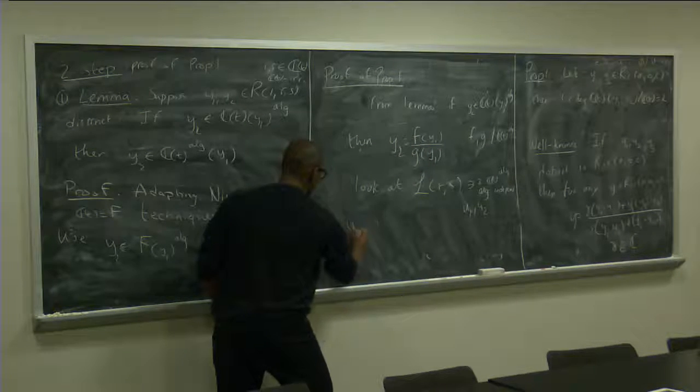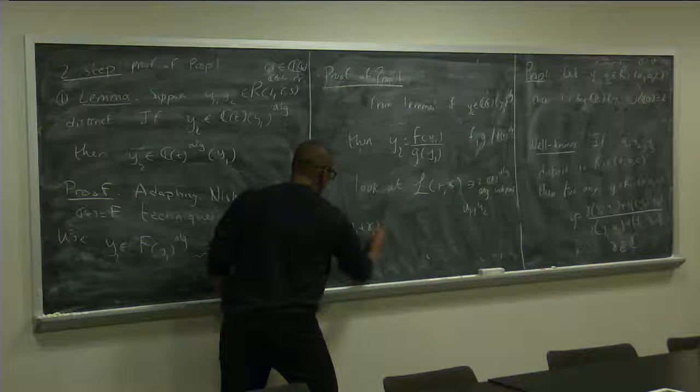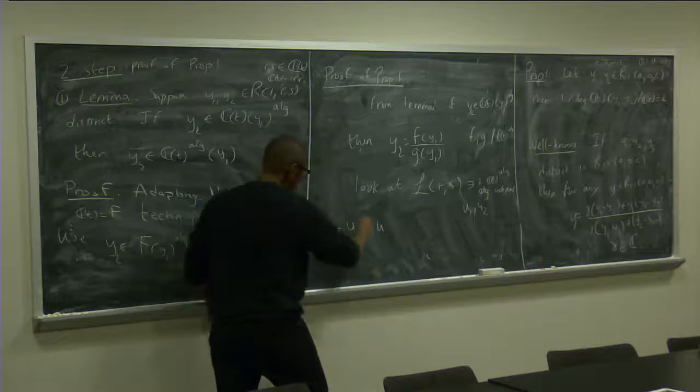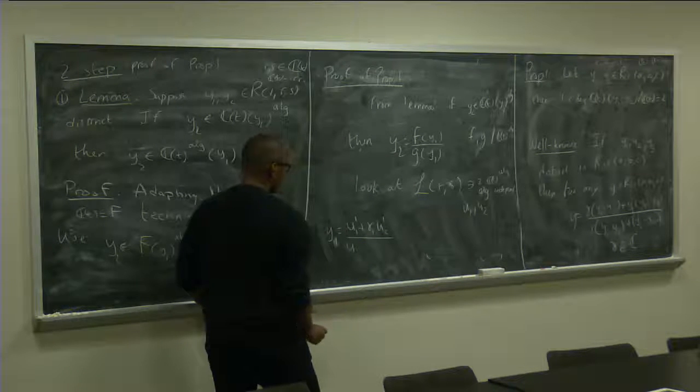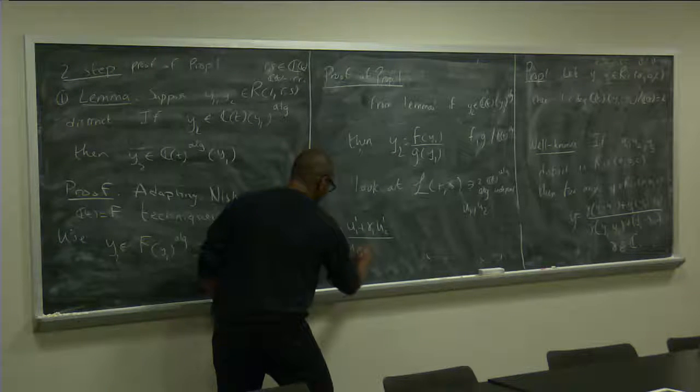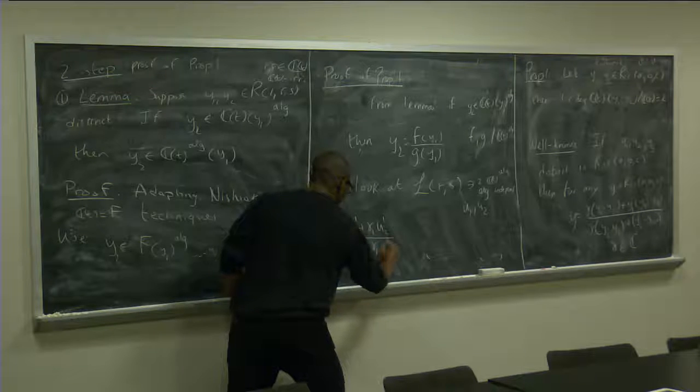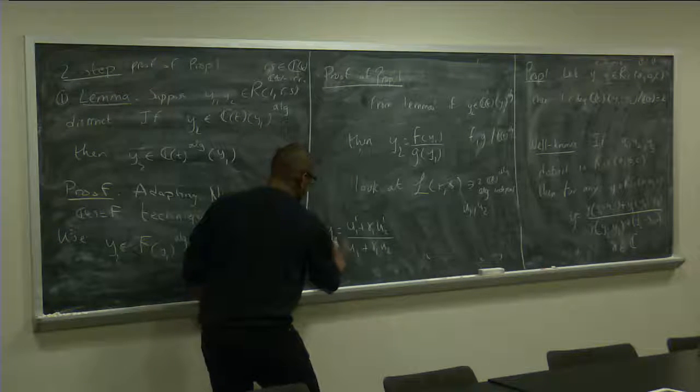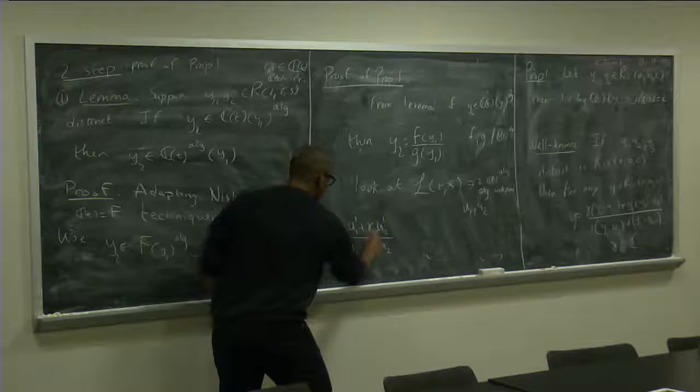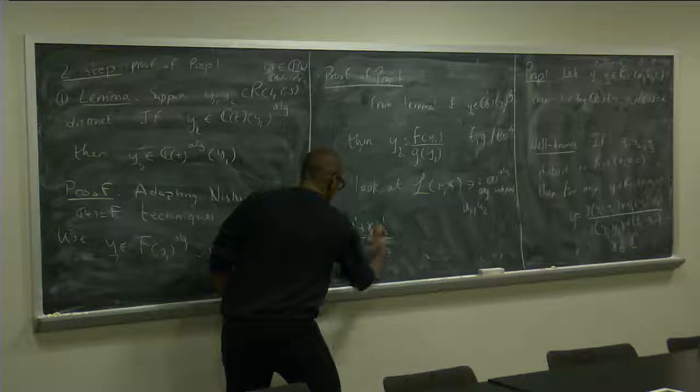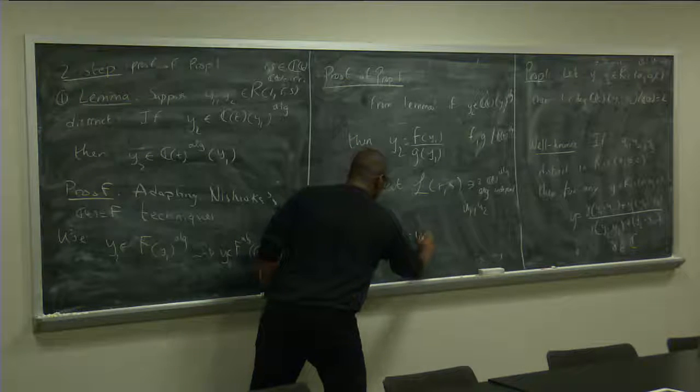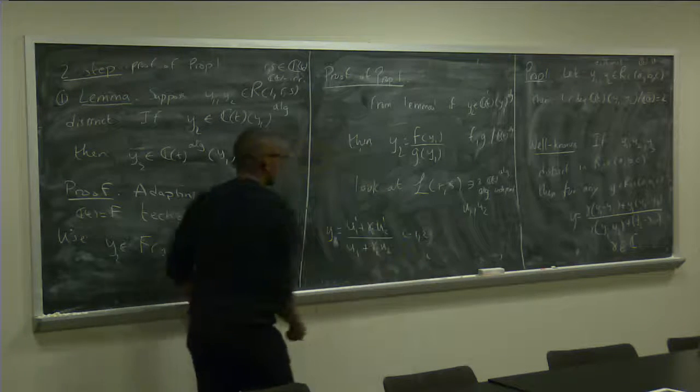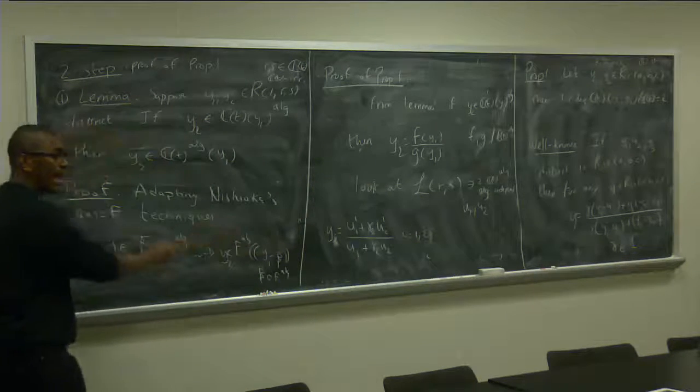Right? So you can pick them in such a way that y2 is, so y1 is, so u1 plus gamma1 is u2. And you can do the same with y2.